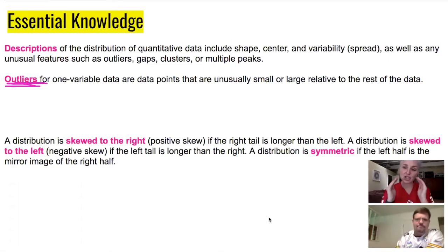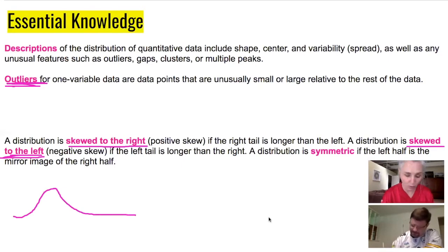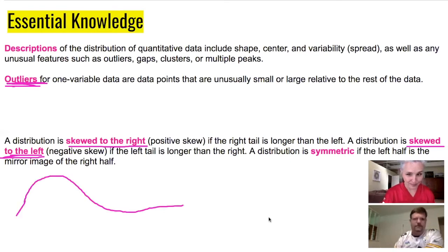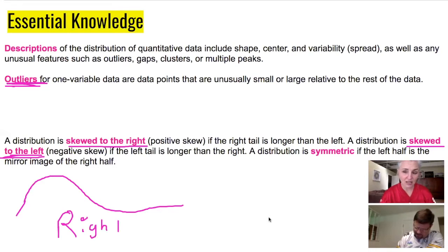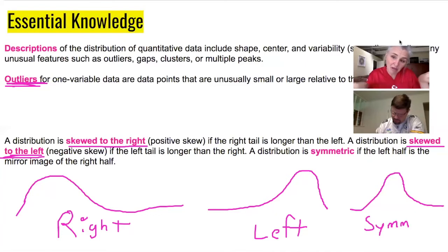There are three typical types of shape you might see. Data is skewed right when the right tail is longer than the left tail — the bump sticks out more to the right. If you are skewed left, the left tail is longer than the right tail. The skewness follows the tail. And if the tails look about the same, we call that symmetric.